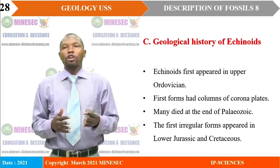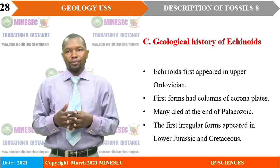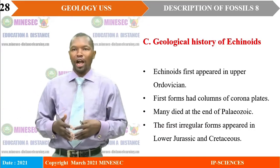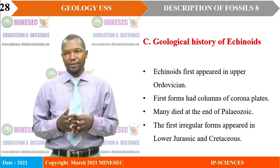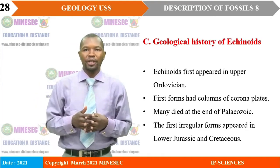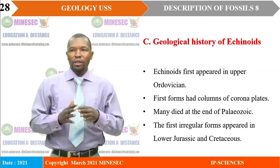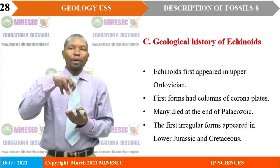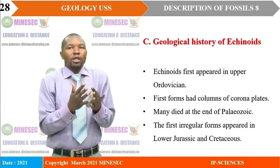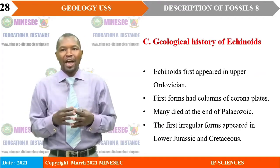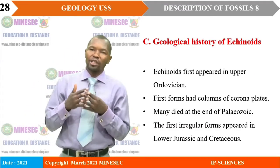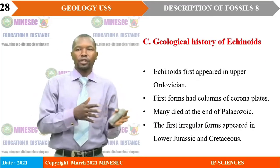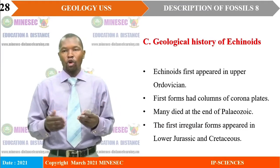After looking at the evolutionary changes in fossil Micraster and their significance, we will now generally look at echinoids and how they evolved with time — that is, their geological history. Echinoids first appeared in Upper Ordovician, when the oldest forms resurfaced. The first forms had columns of corona plates, which carry tube feet and guide the mode of life of the organism. Many of them died at the end of the Palaeozoic. The first irregular forms appeared in the Lower Jurassic and up to Cretaceous. That is briefly the big picture of the evolutionary history.